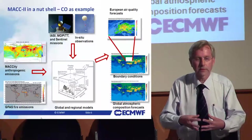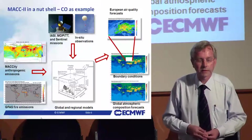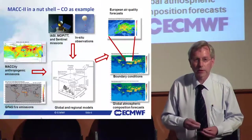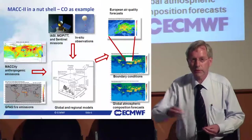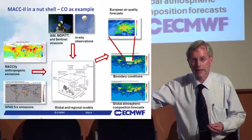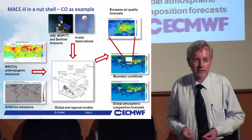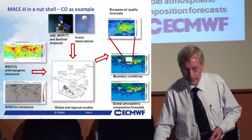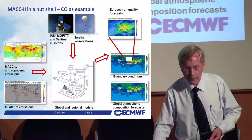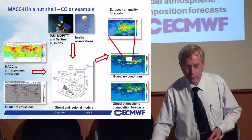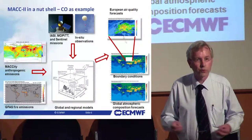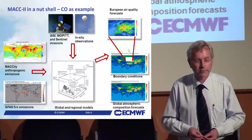All this feeds into a global modeling system used for forecasts a few days and even up to 10 days ahead. From the global forecast system, boundary conditions feed regional models on the European scale for air quality forecasts.